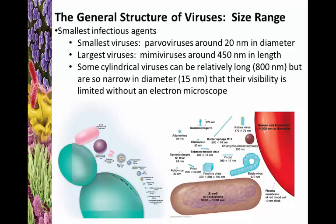The largest viruses, like the mimivirus, are around 450 nanometers in length. Some cylindrical viruses can be quite long but are usually also very narrow, so they're still very hard to detect. You can see here an E. coli and a portion of a red blood cell for comparison - a highly coated Ebola virus, polio virus, adenovirus which causes common cold, and rhinovirus which also causes a lot of common colds. These are very, very small.